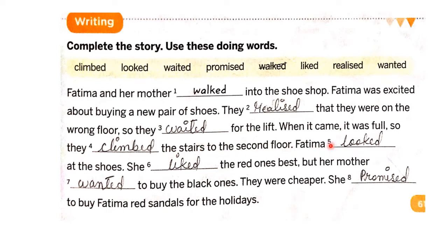Fatima — number five: looked — at the shoes. Number six: liked — the red ones best. But her mother — number seven: wanted — to buy the black ones. They were cheaper. Number eight: promised — to buy Fatima red sandals for the holidays. So these are the two story writing with pictures and words activities.